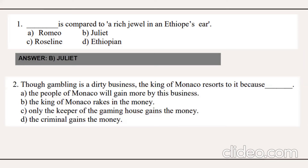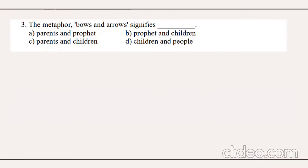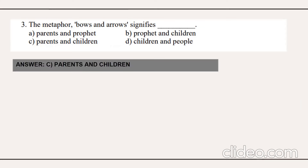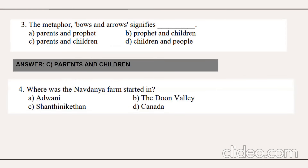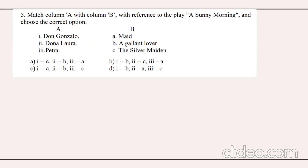Question number two: though gambling is a dirty business, the king of Monaco resorts to it because — option B — the king of Monaco brings in the money. Question number three: the metaphor 'bows and arrows' signifies — option C — it signifies parents and children. Question number four: where was the Navdanya farm started? It was started in — option B — the Doon Valley.